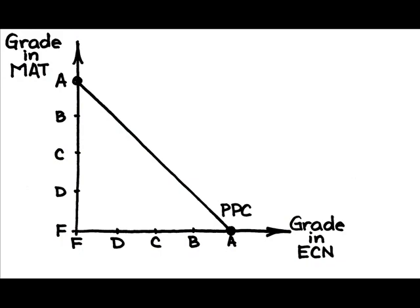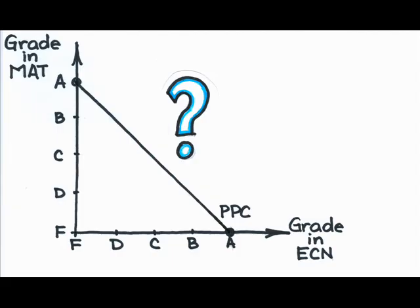The production possibilities curve illustrates the positive analysis, all possible ways in which the student can choose to use his or her time. Now for the normative question, what combination will the student choose?